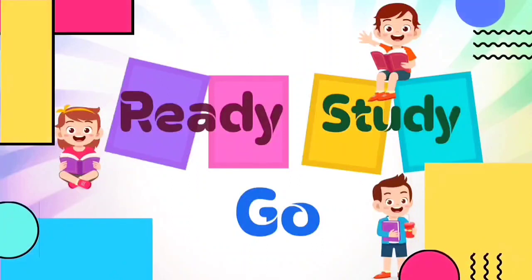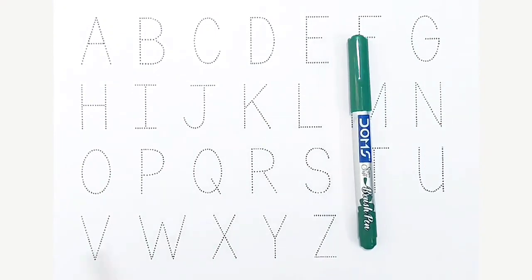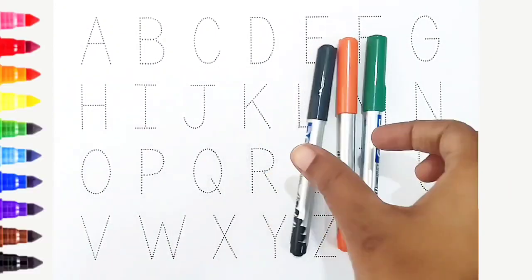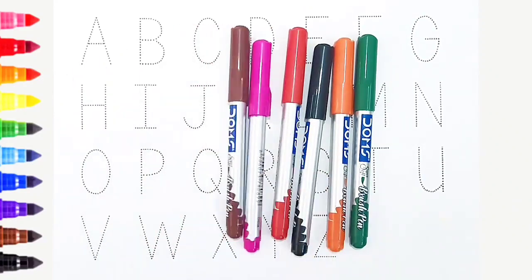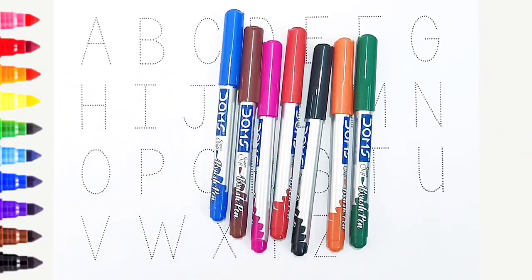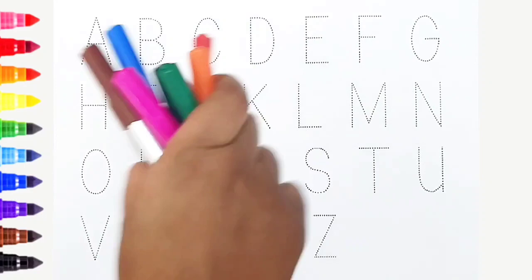Ready, study, go! Green color, orange color, black color, red color, pink color, brown color, blue color. Hi kids, today we can learn the alphabets from A to Z.